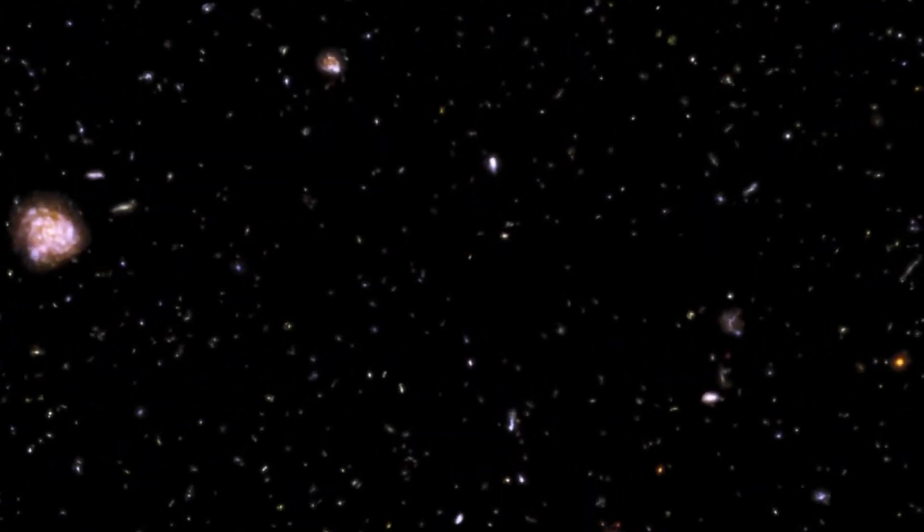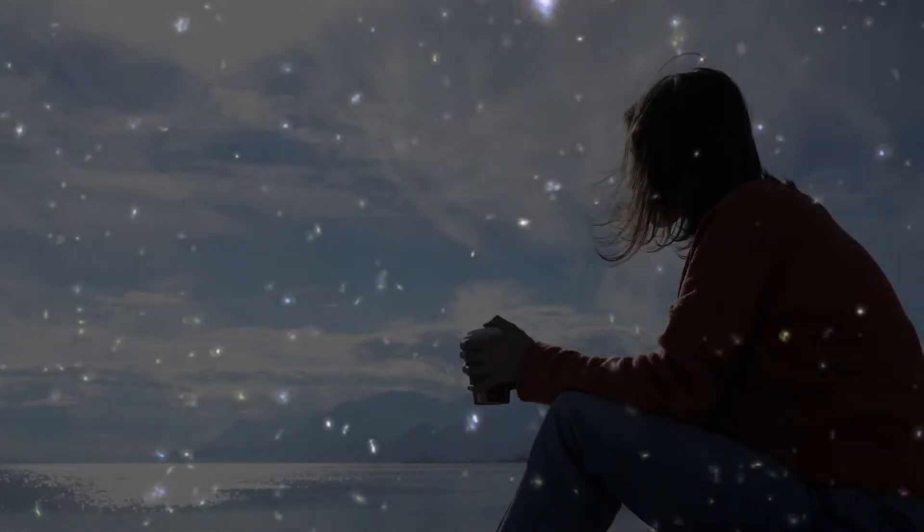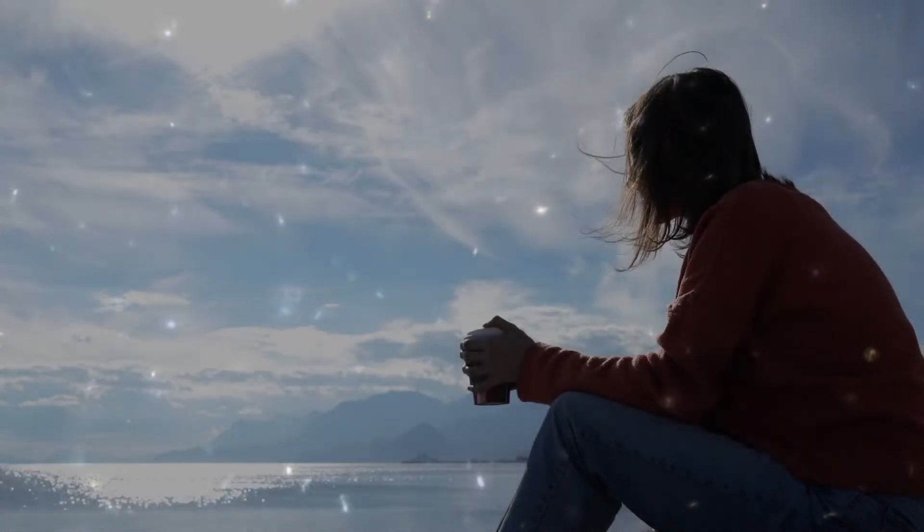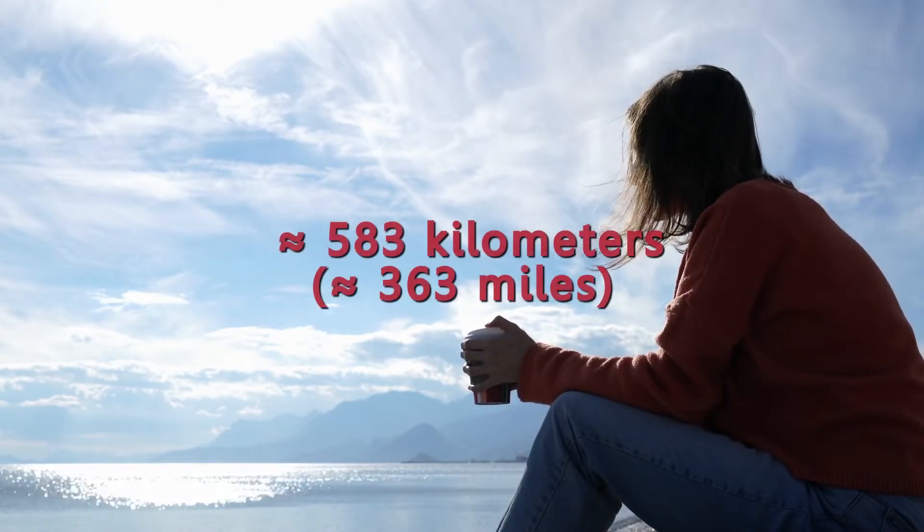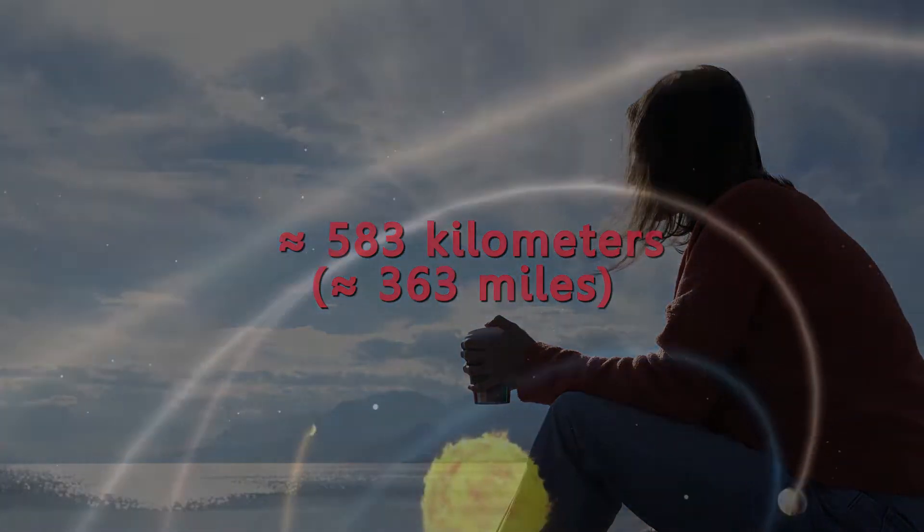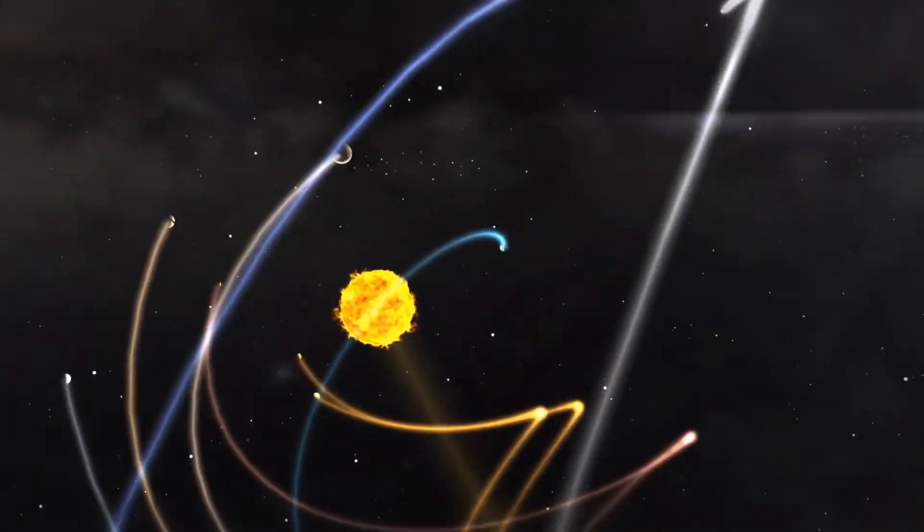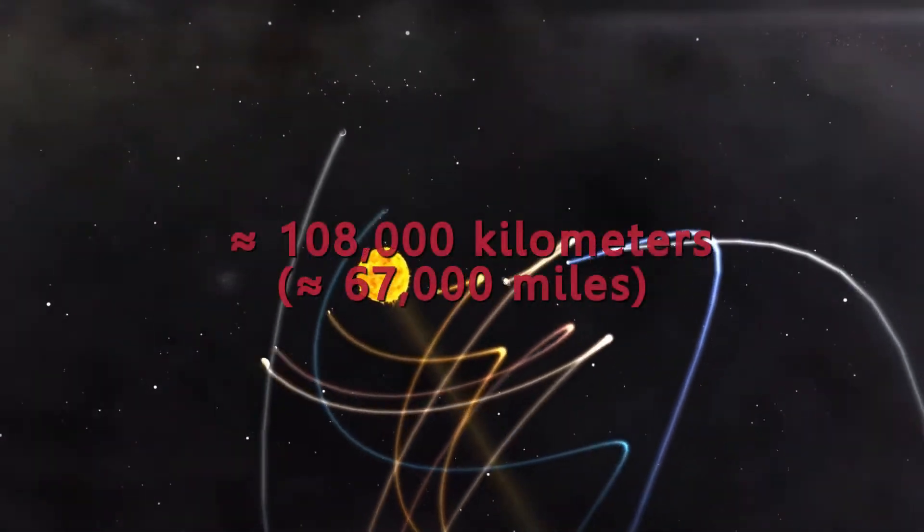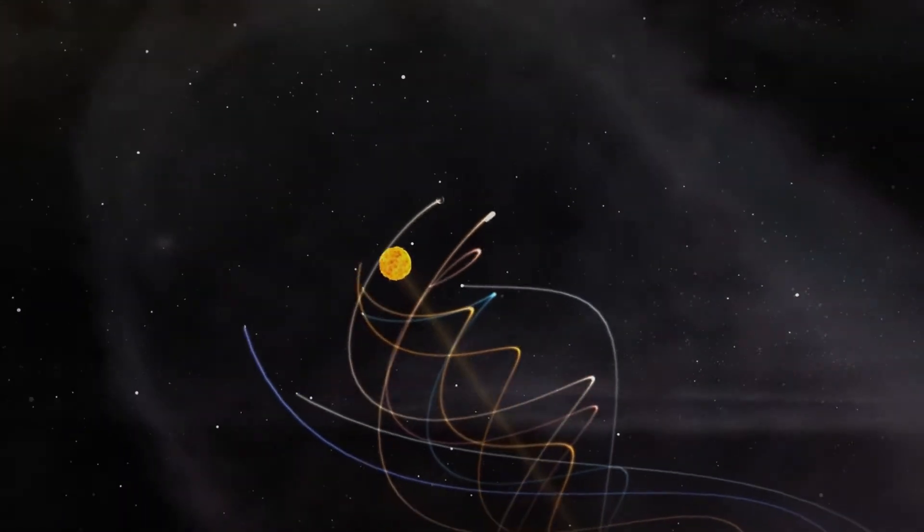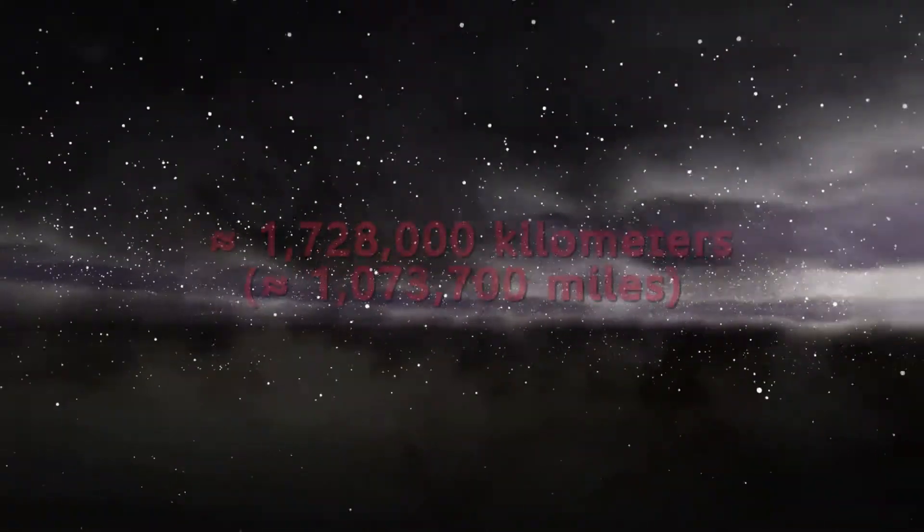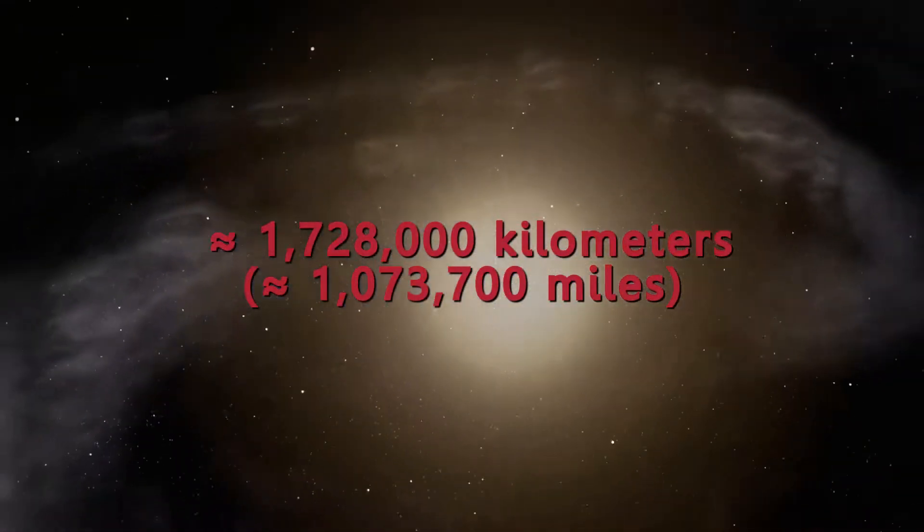So basically, even when you think you're standing still doing nothing, in just one second you've traveled throughout the universe roughly 600 kilometers. In one hour you went around the sun about 108,000 kilometers. In one day you've traveled through the Milky Way over 1 million 500,000 kilometers.